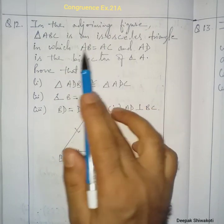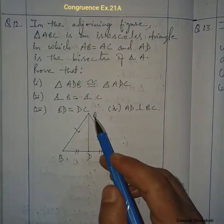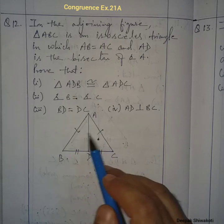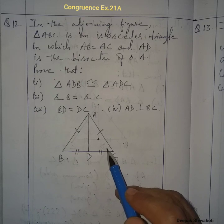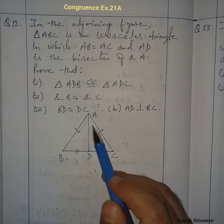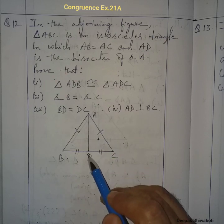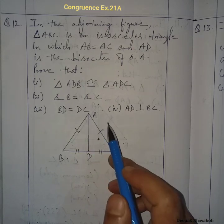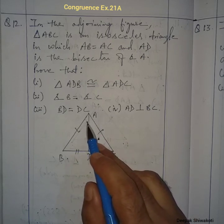Question 12: In the adjoining figure, triangle ABC is an isosceles triangle, meaning the two opposite sides are equal and the two opposite angles are equal. AB equals AC (given), and AD is the bisector of angle A, meaning these two angles are equal.